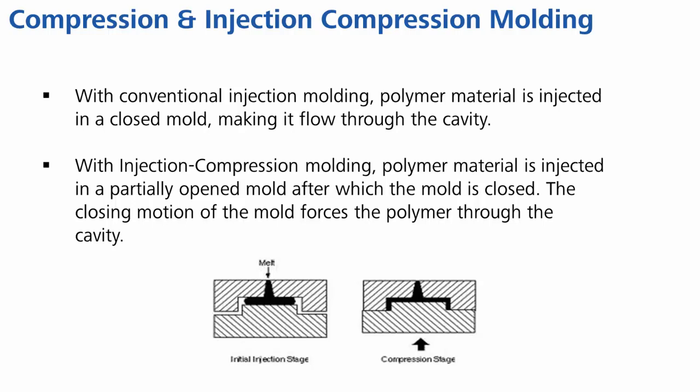With injection compression molding, material is injected into an open mold. After the material is injected, the mold will close, which forces the material to flow through the cavity.